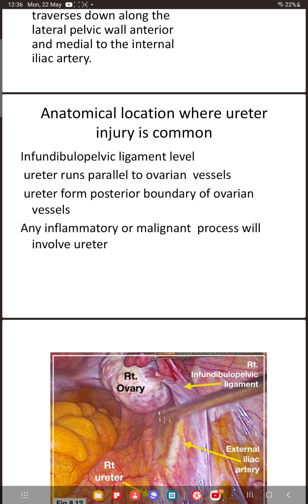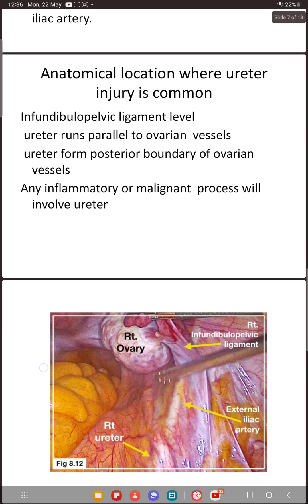We should know the common places where we can accidentally injure the ureter. The first and most common site for injury is at the infundibulopelvic ligament level, where the ureter runs parallel to the ovarian vessels. In this picture you can clearly see that the ureter is at the posterior border of the ovarian vessels. If there is an inflammatory or malignant process involving the ovary stuck to the posterior wall where the ureter lies, you can accidentally injure it.